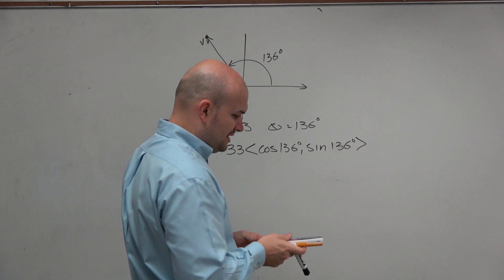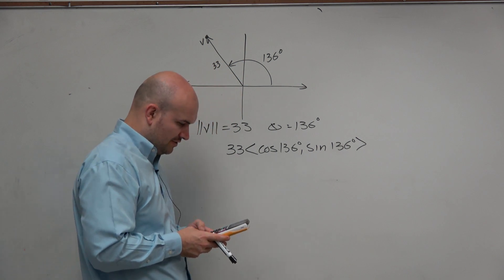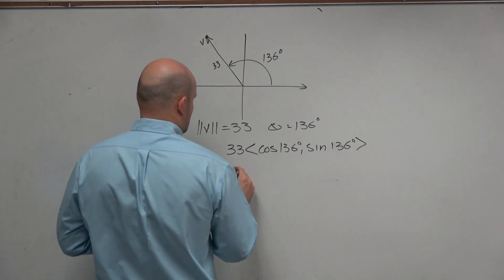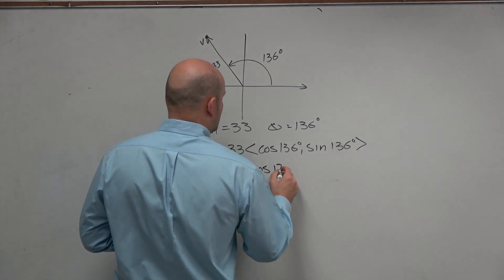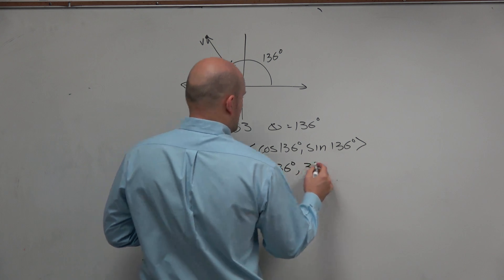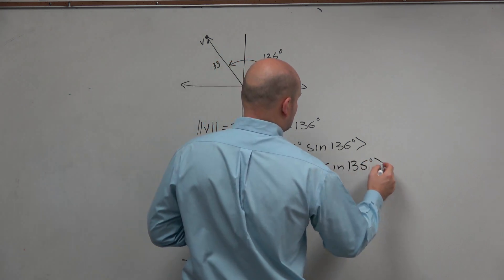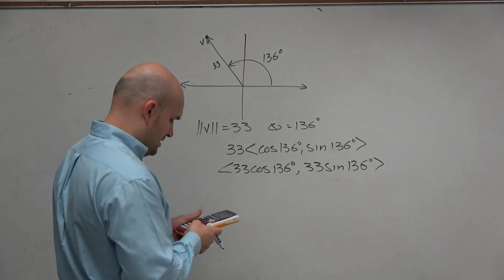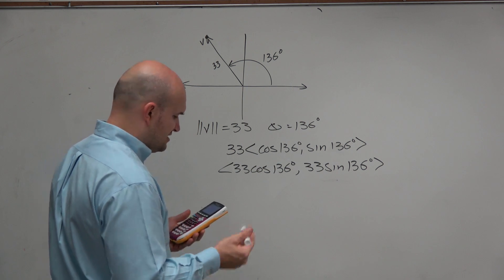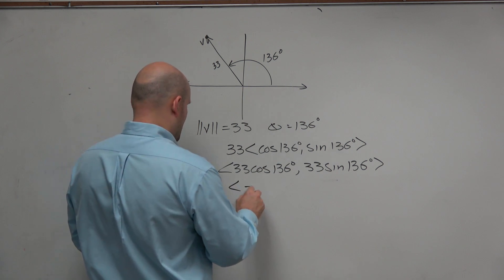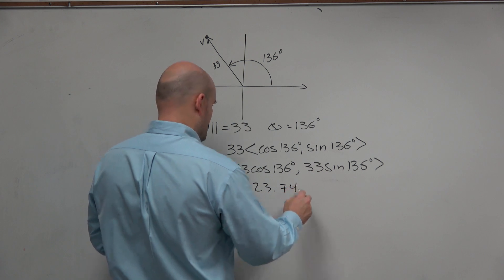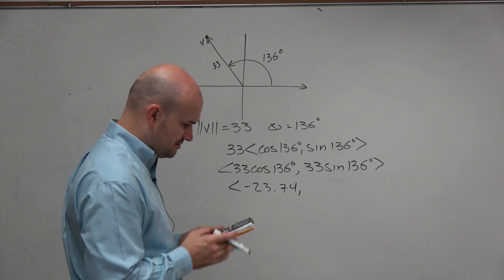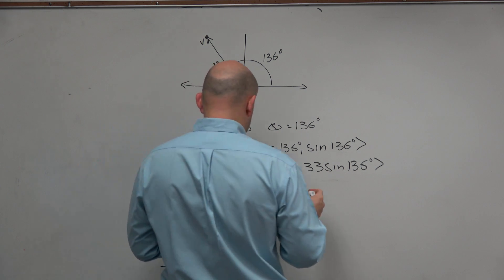So I just take my handy-dandy calculator. I do cosine of 136, make sure I'm in degree mode. Remember, you multiply this times everything—33 times cosine of 136 degrees, 33 times sine of 136. So when I do that and I round it to the nearest tenth, I get negative 23.74. And then over here, I have 33 times the sine of 136, and I get 22.92.